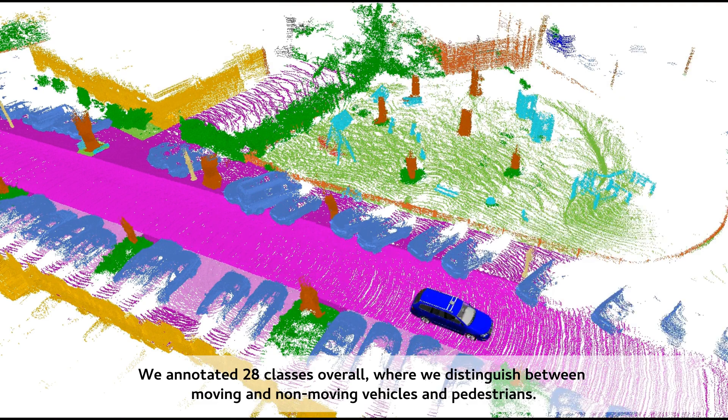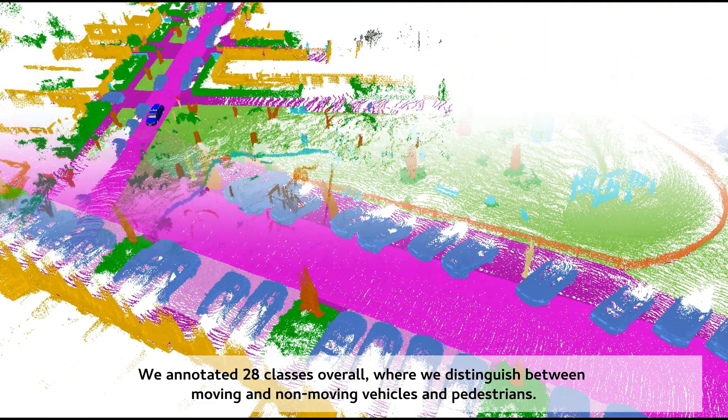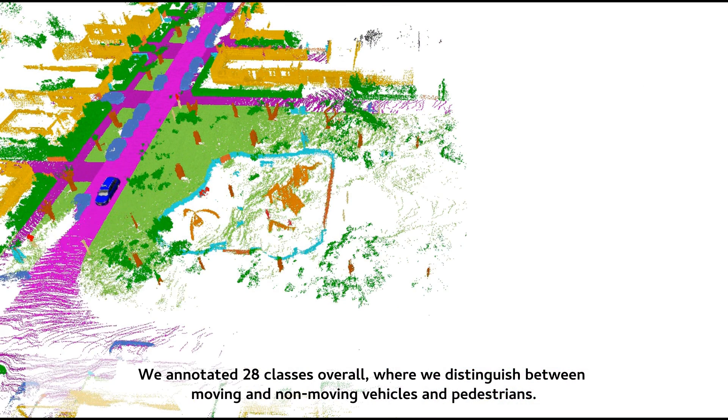We annotated 28 classes overall, where we distinguish between moving and non-moving vehicles and pedestrians.